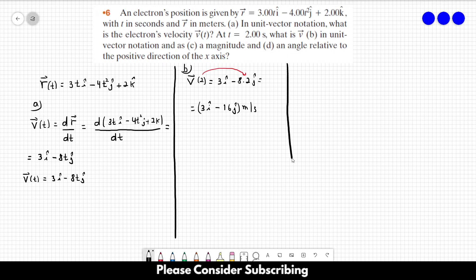Letter c, what is the magnitude of this vector? We just take the square root of each component squared and sum everything up. So it's 3 squared plus minus 16 squared. And this is equal to roughly 16.3 meters per second. Don't forget to include the unit of the velocity.